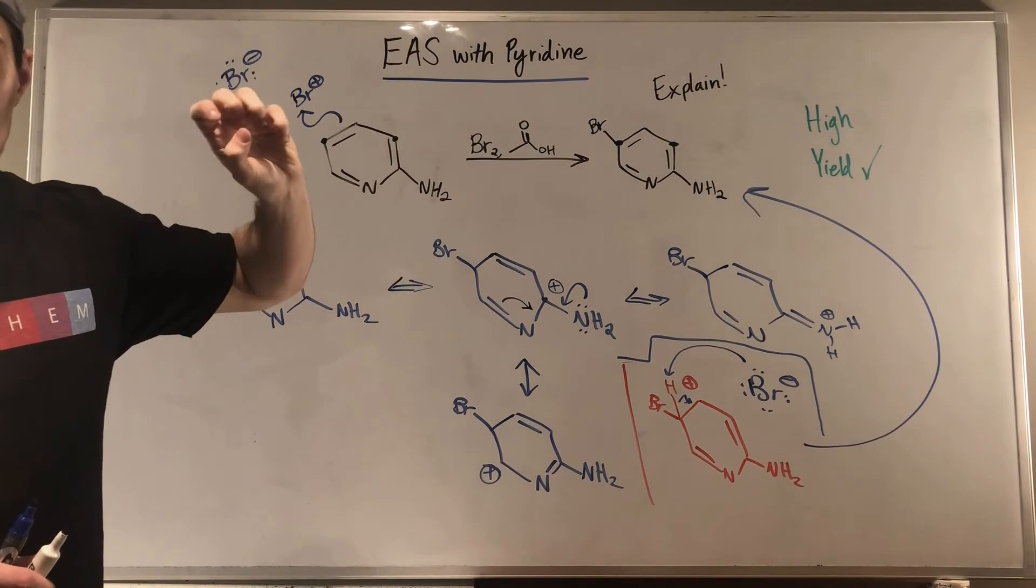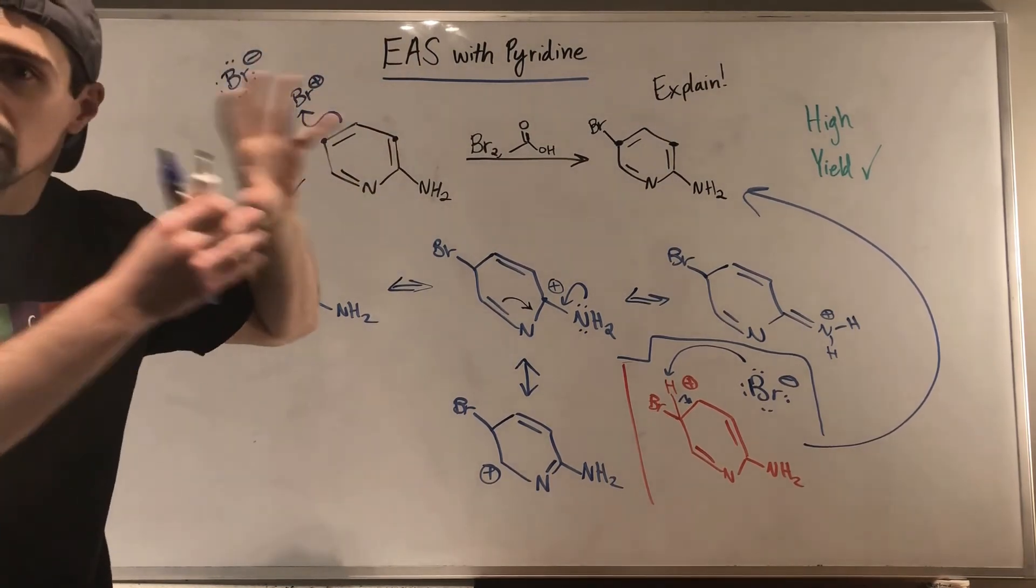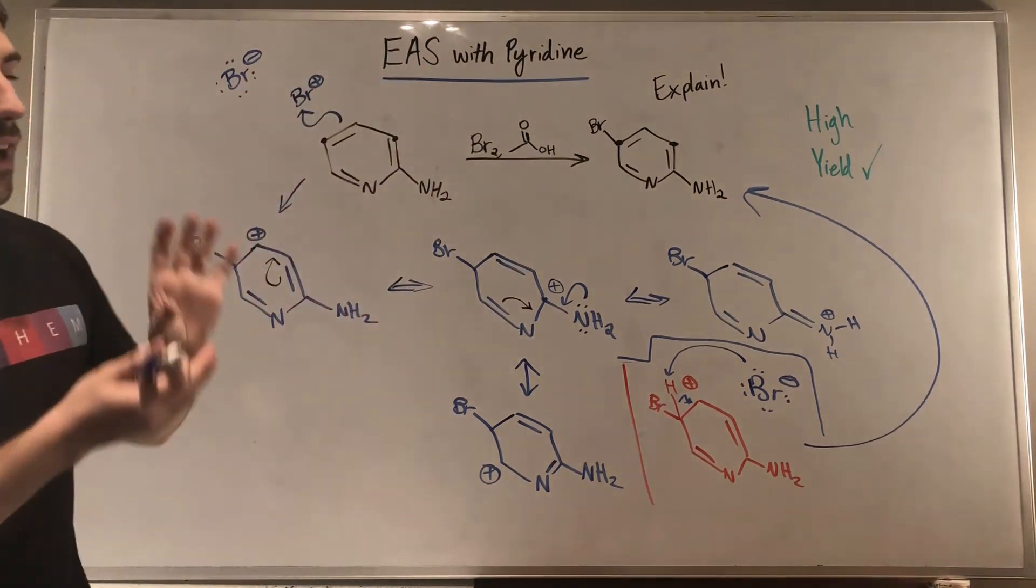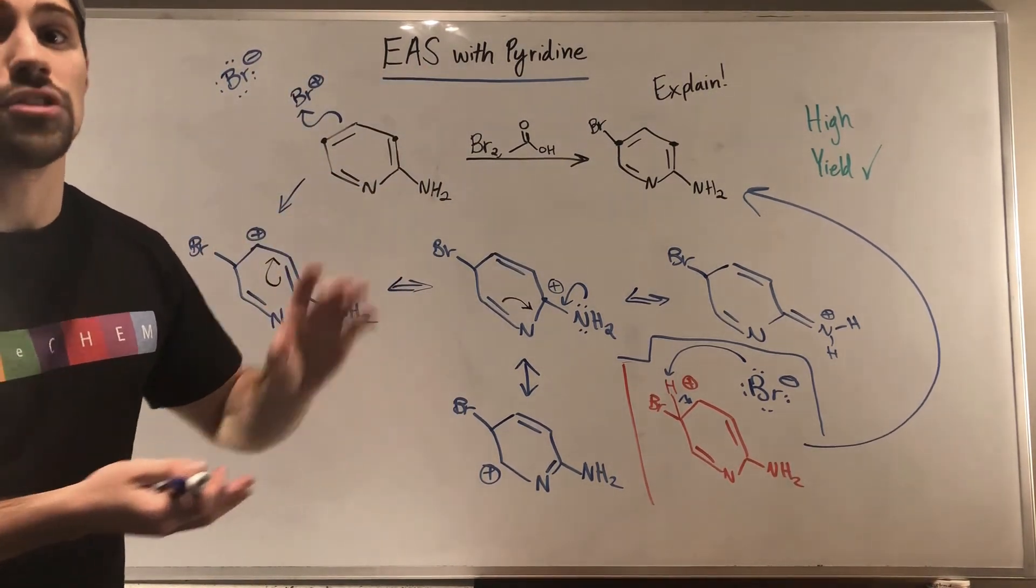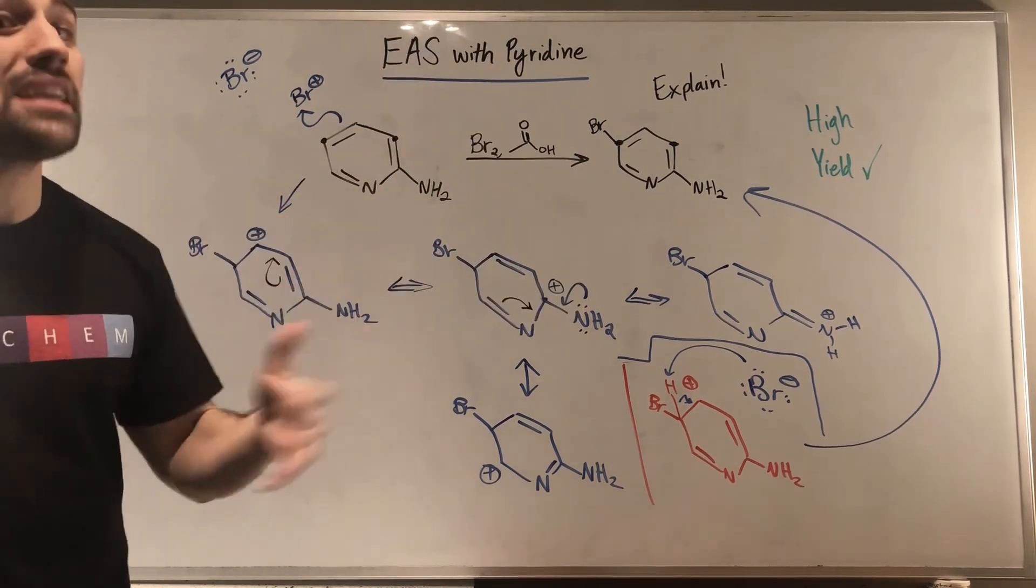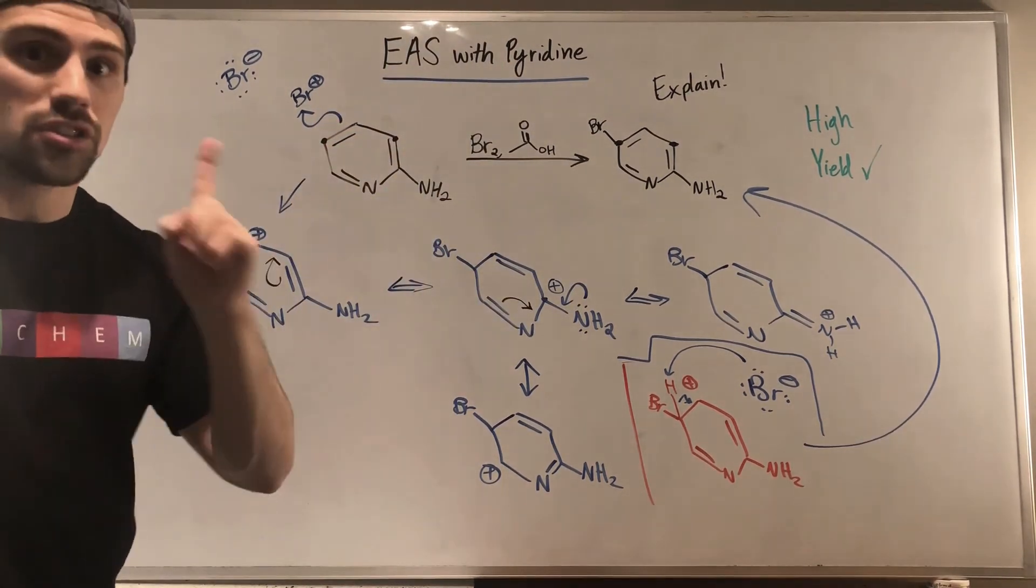We need to regain our aromaticity - clearly we see that in our product. It's the same deal as we would do in regular EAS. We would have the BR- that was around after we produced the BR+, that will come back looking for something to grab. It'll see this H that's dying to fall off so we can regain our aromaticity. We can grab it, electrons will swing down there, we'll regain the aromaticity of the ring and we get exactly this back up top.